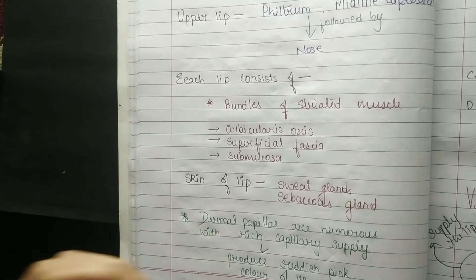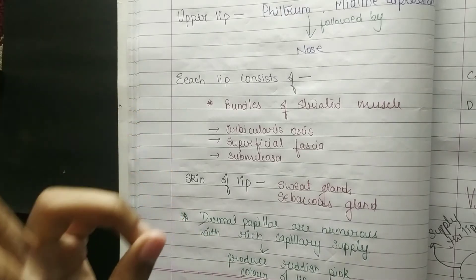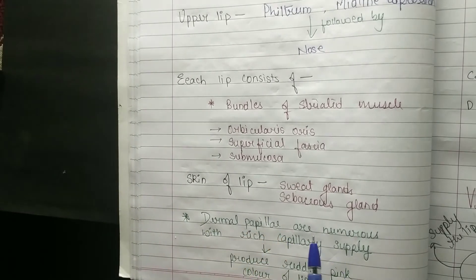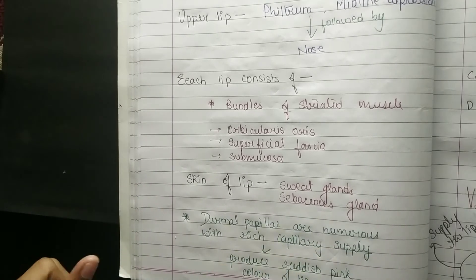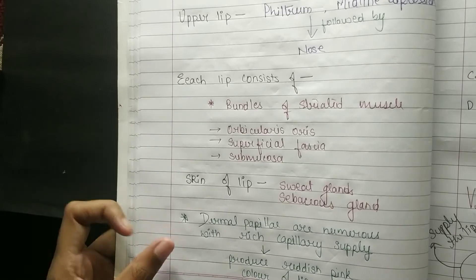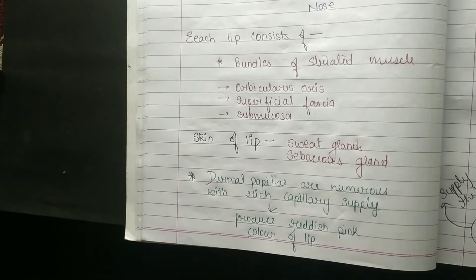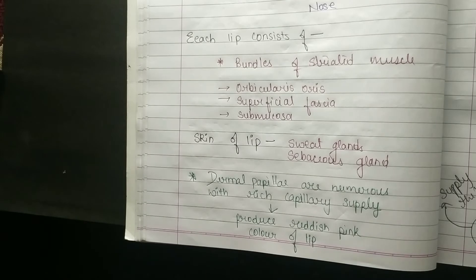Now, the skin of the lip — what is involved? Sweat glands and sebaceous glands. Then there are dermal papillae, which are numerous with rich capillary supply, which produce the reddish-pink color of the lip. Because the dermal papillae are numerous and have rich capillary supply, that is why your lips are reddish-pink.